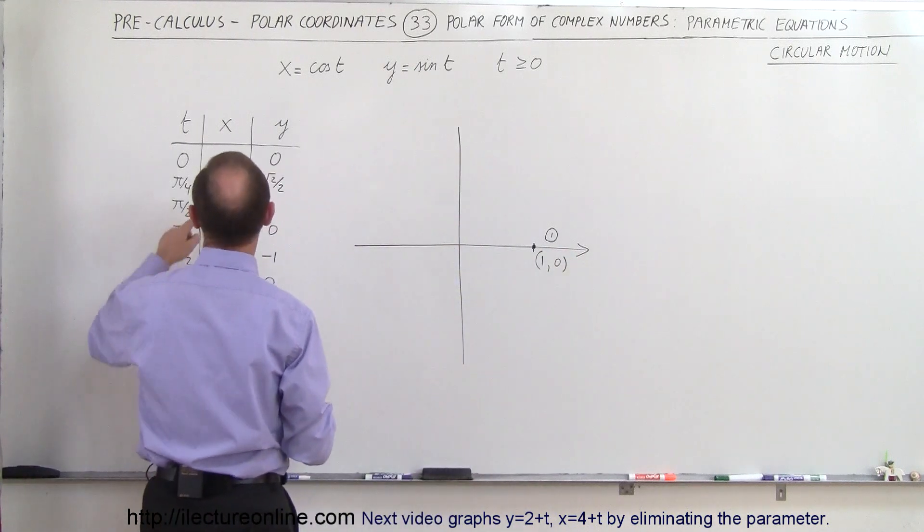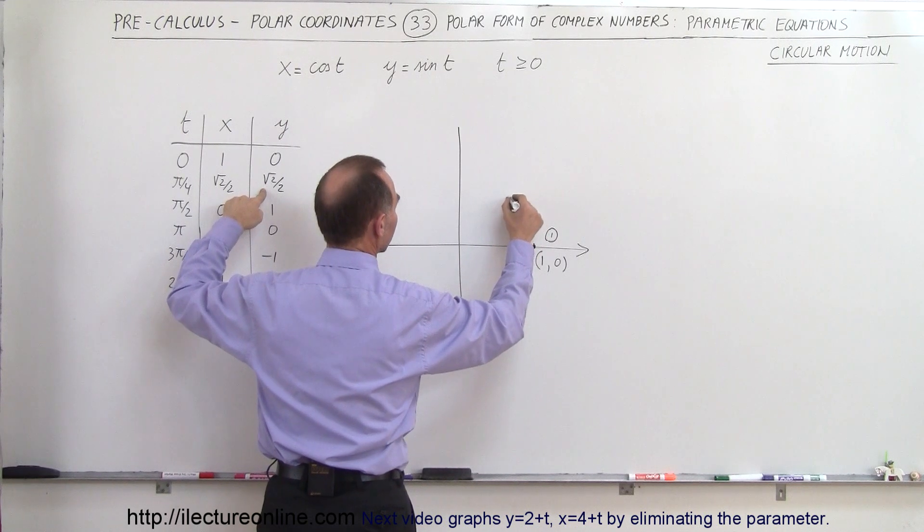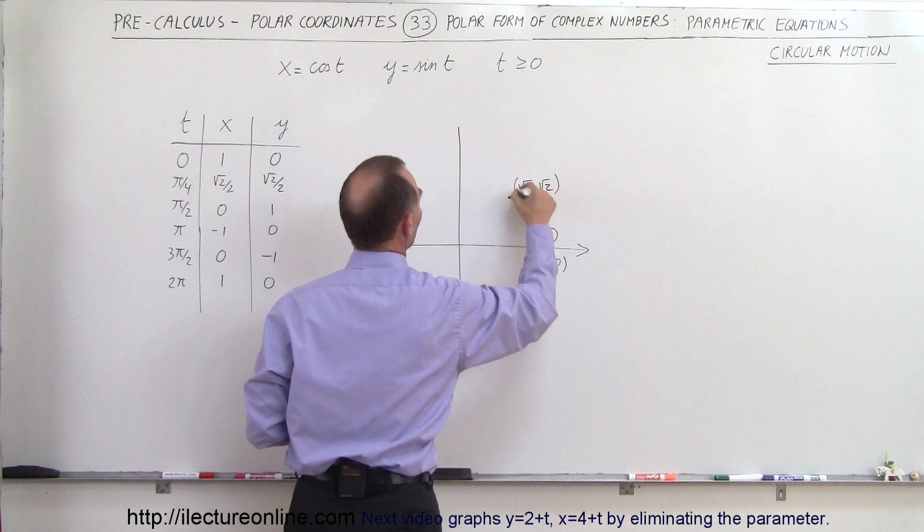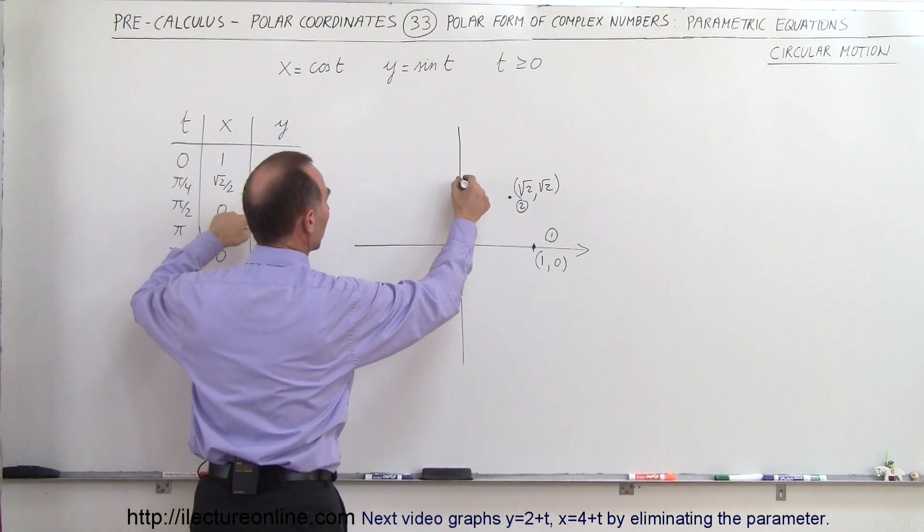The next point would be square root of 2 over 2, square root of 2 over 2, so that would be about here. That's the square root of 2 over 2, square root of 2 over 2 for the x,y coordinates. That's point number 2. Point number 3, x will be 0, y will be 1, so that would be right about there at (0,1).